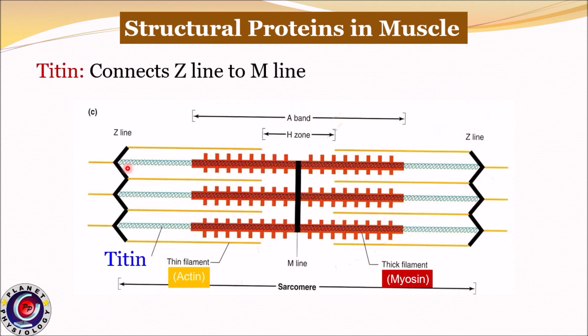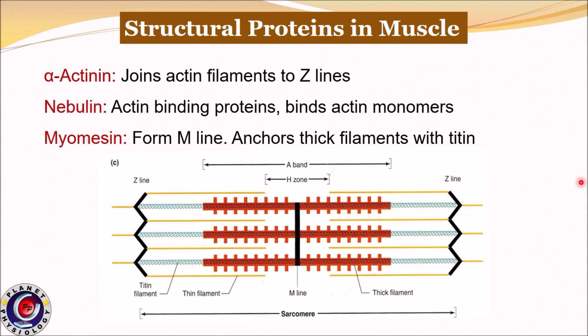Another important structural protein is titin. This is the largest known protein, with a molecular weight of 3 million. It connects Z-lines to M-lines, stabilizes thick filaments, and maintains their position. It acts like a spring and prevents over-stretching of the sarcomere. Other anchoring proteins include alpha-actinin, which attaches actin filaments to Z-lines; nebulin, an actin-binding protein that binds actin monomers; and myomesin, which is part of the M-line, anchors thick filaments with titin, and stabilizes and aligns them.